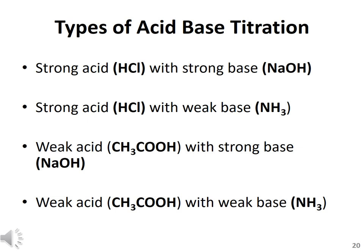Acid-base titrations can be classified into four types: (1) strong acid (hydrochloric acid) versus strong base (sodium hydroxide); (2) strong acid (hydrochloric acid) versus weak base (ammonia); (3) weak acid (acetic acid) versus strong base (sodium hydroxide); and (4) weak acid (acetic acid) versus weak base (ammonia). Depending on whether the acid or base is strong or weak, the appropriate pH indicator is selected — for example, for a strong acid versus strong base neutralization, phenolphthalein is used as the indicator.